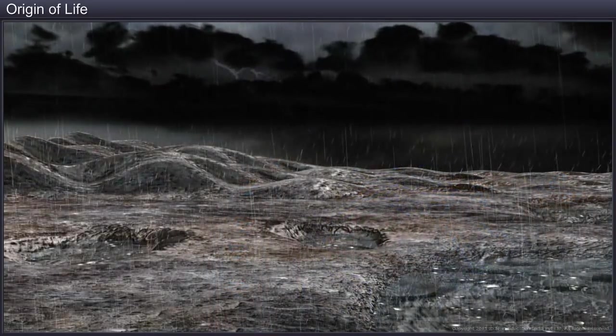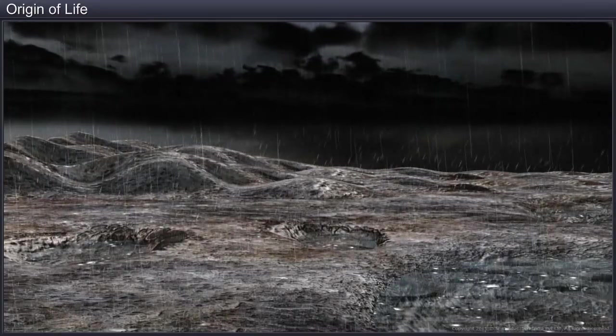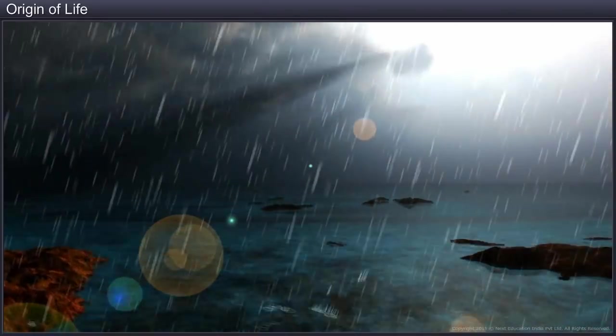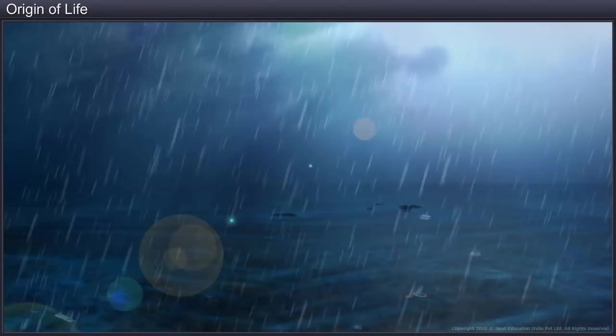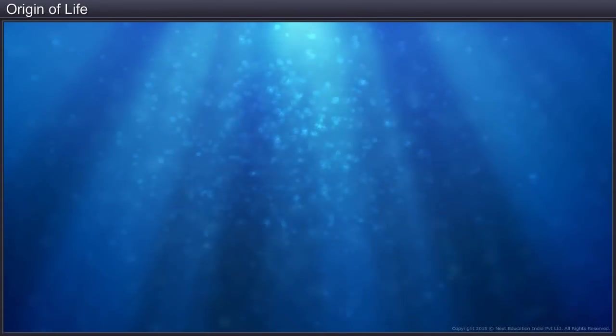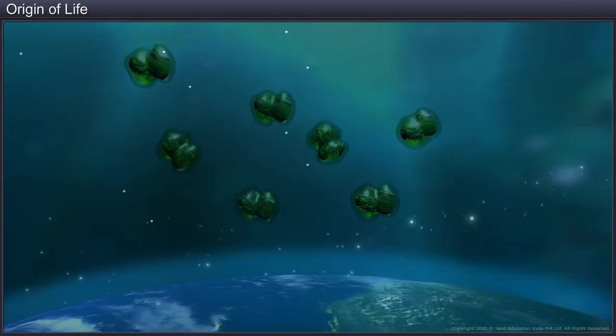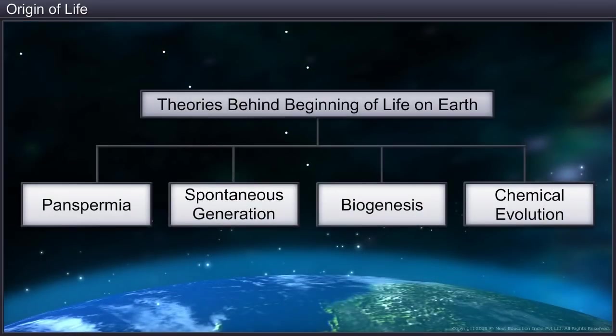Some of the water vapor cooled and came down as rain, which filled all the deep depressions on the earth and formed oceans. It is estimated that life appeared on earth 500 million years after its formation. There are different theories that try to explain the beginning of life on earth.